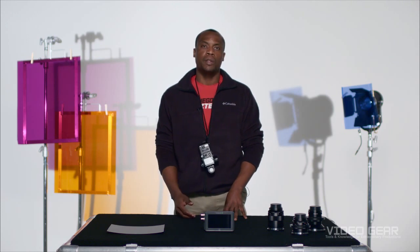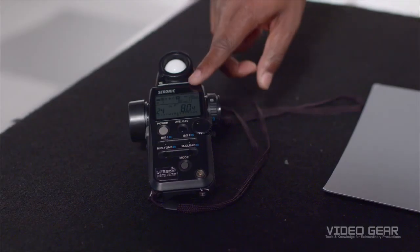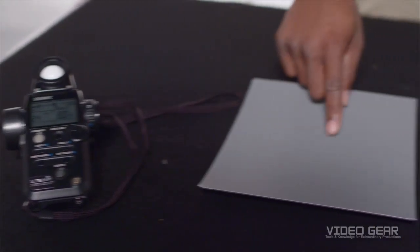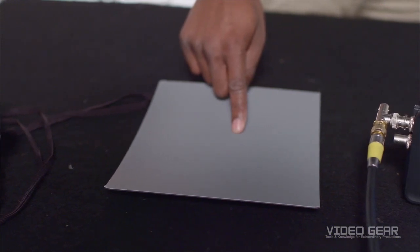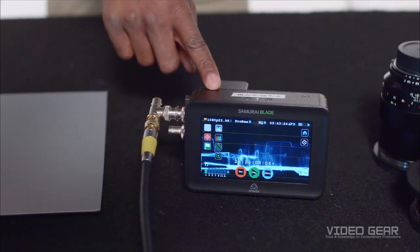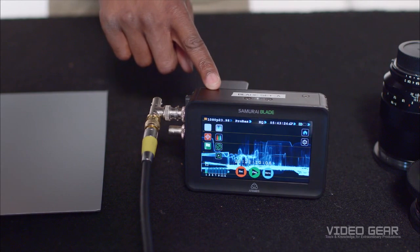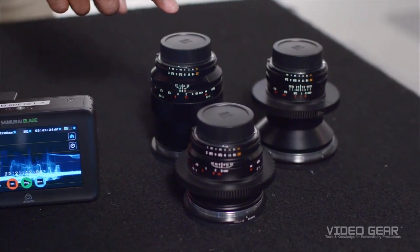And some of the hardware we're working with includes a Sekonic light meter, an 18% R27 gray card, an Atomos Samurai blade only used as a waveform monitor, and a set of ZF Zeiss primes.